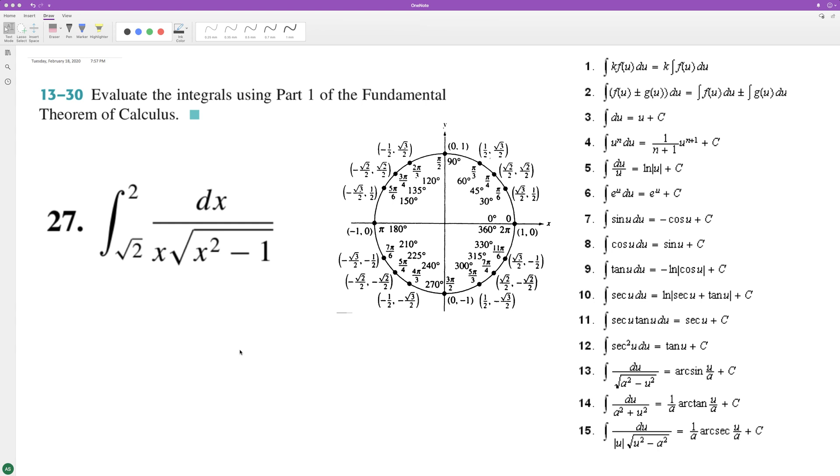And find the result from the definite integral. So I've got a list of integrals here and if you look, this matches up with number 15 here. So we get the arc secant, the inverse secant, and it's just going to be X in this case.